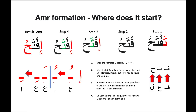We shall be forming amr from taftahu. The first rule is: drop the alamate mudari. As you remember, all the prefixes for fi'il mudari are identified by four characters: a, ta, ya, na — 'a tayna.' So in taftahu, the ta is the alamate mudari, marking it as a mudari verb. To make amr, this alamate mudari needs to be deleted. When the ta is removed from taftahu, in step one we have got fa with sukun, ta with fatha, and hu with damma.